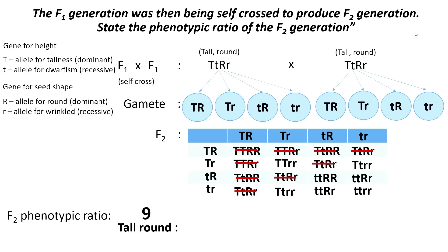Next, check the next unmarked box and determine its phenotype — in this case it is tall and wrinkled. Count how many tall and wrinkled individuals are in the Punnett square. There are 3 tall and wrinkled individuals.